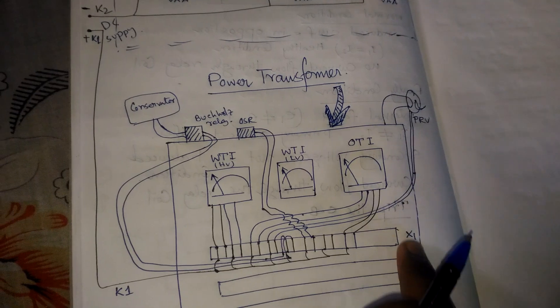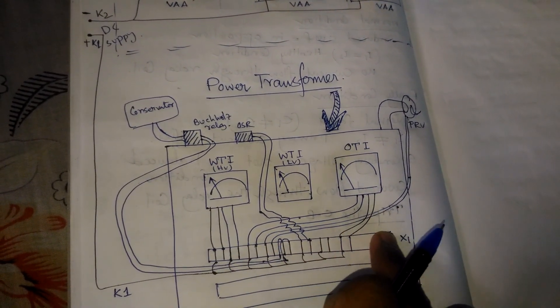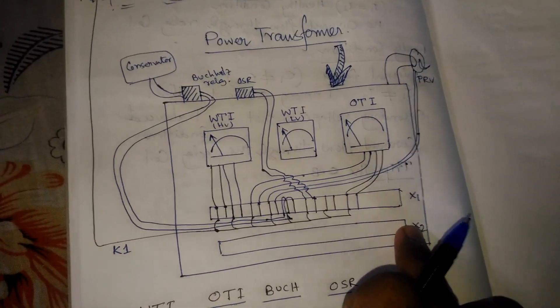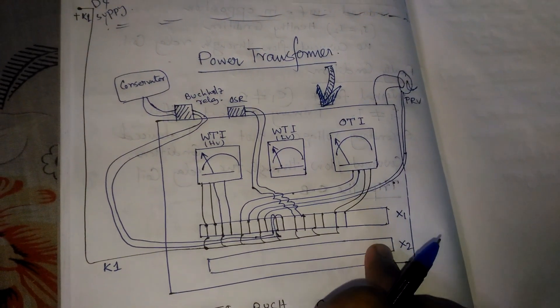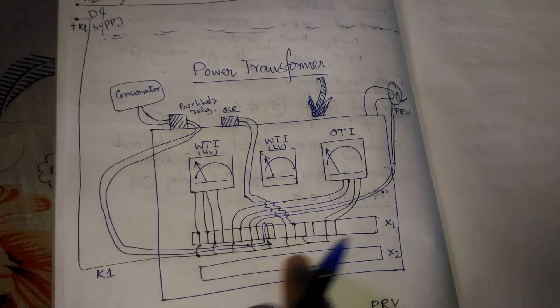X1 terminal box is used for the protection and supply of the transformer, and X2 TB is used for supply to the cooling system, that is the cooling fan pump, lighting purpose, and auxiliary supply purpose.